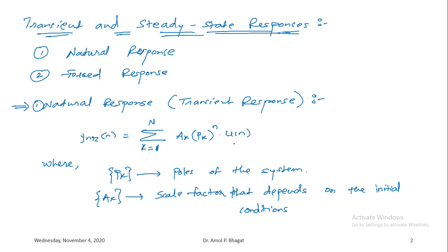The generalized form of the natural response is y_nr(n) equals summation from k equals 1 to N of a_k times p_k raised to power n times u(n). The difference between the natural response and the forced response is only in the scaling factor. The scale factor a_k depends on the initial conditions — specifically y(−1), y(−2), and so on — since in the zero input response the input is taken as zero.